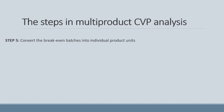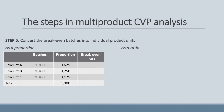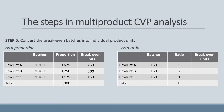Step 5 is to convert breakeven batches back into individual product units by multiplying by the proportion or ratio. Using the proportion method, 1,200 batches multiplied by 0.625, 0.25, and 0.125 gives 750 units of A, 300 units of B, and 150 units of C. Using the ratio method, 150 batches multiplied by 5, 2, and 1 also gives 750, 300, and 150 units respectively. Both methods give the identical answer.